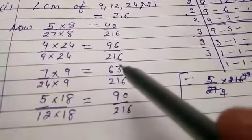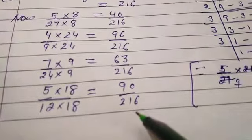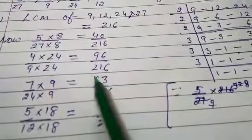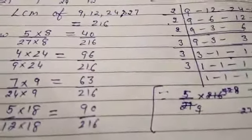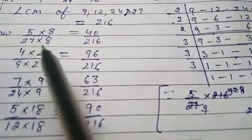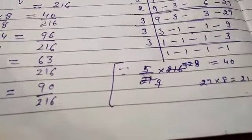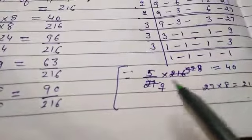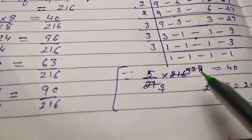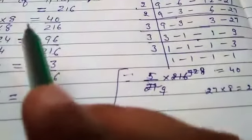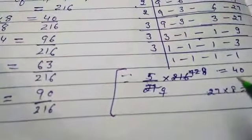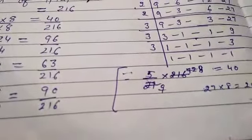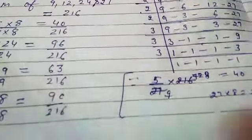To find the multiplier for each fraction, divide the LCM by the denominator. For 5/27, we divide 216 by 27 to get 8, then multiply both numerator and denominator by 8. This gives us the equivalent fraction with LCM as denominator.